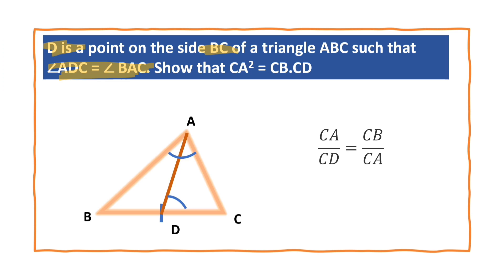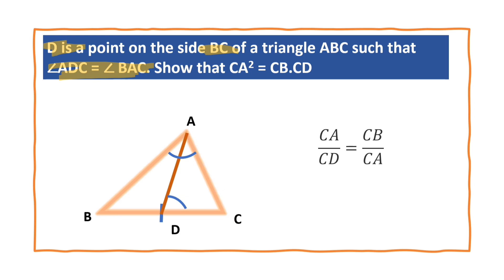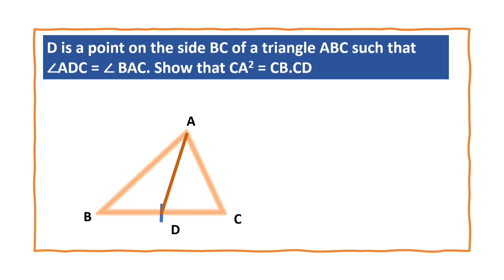In triangle ABC, CA is this side, and CD is this side. We are involved with triangles ABC and ADC, so let us solve the problem with this idea.